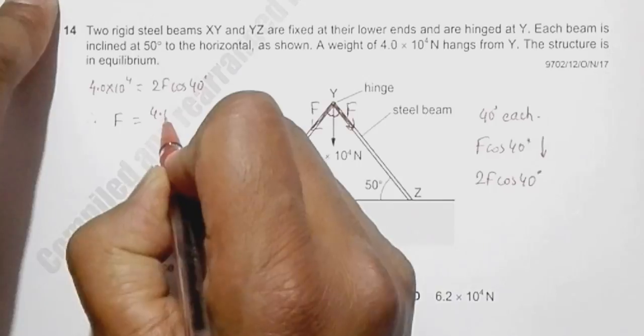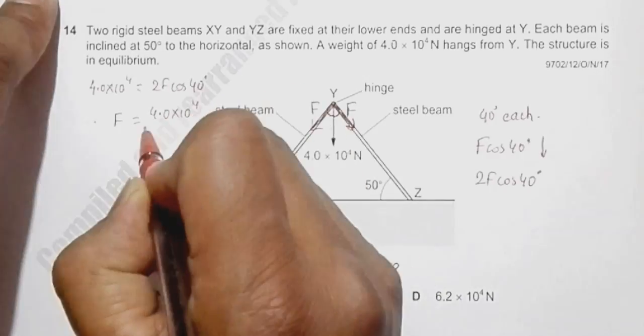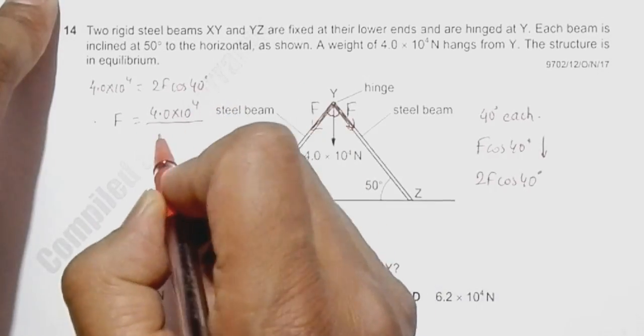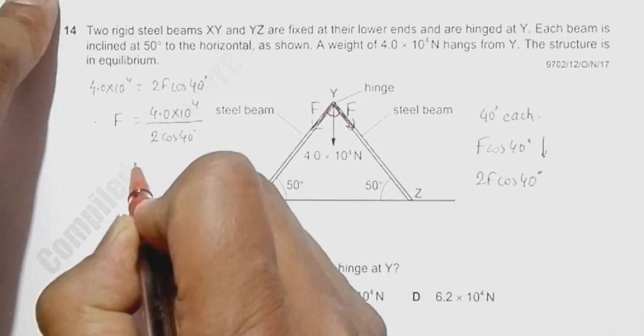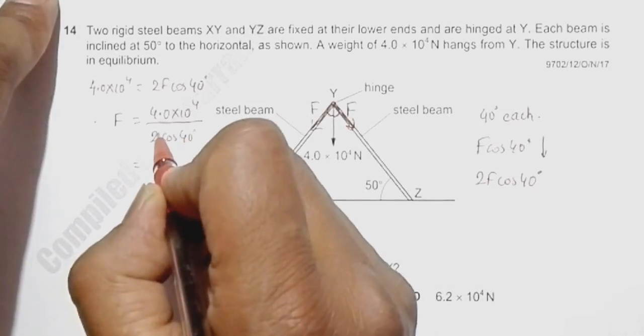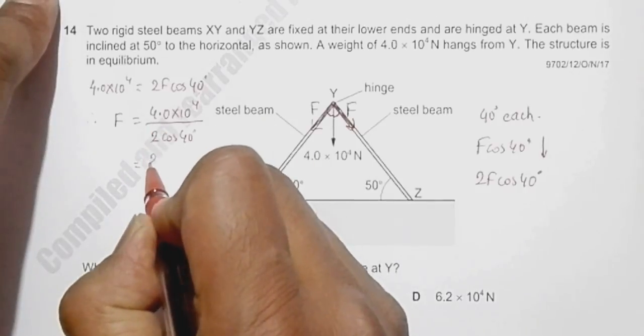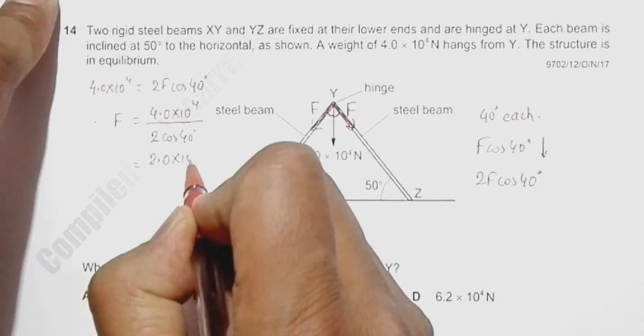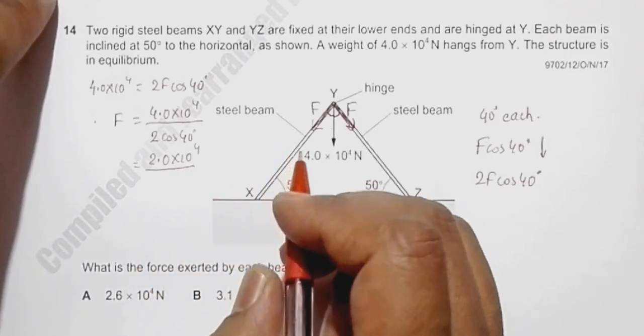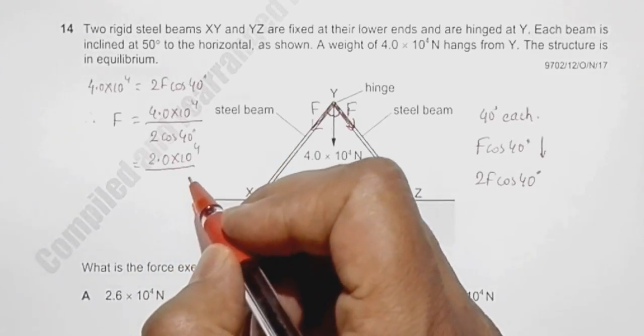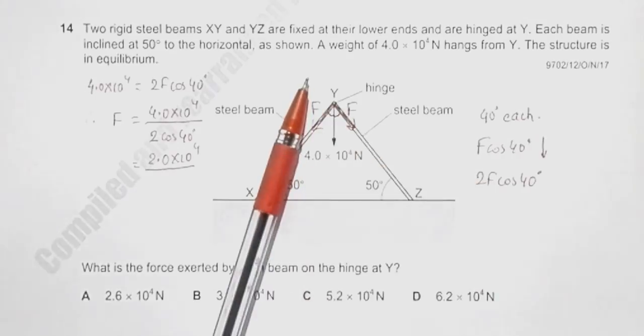F is equal to 4.0 × 10^4 divided by 2 cos 40 degrees, which simplifies to 2.0 × 10^4 divided by cos 40. Let me calculate this value.